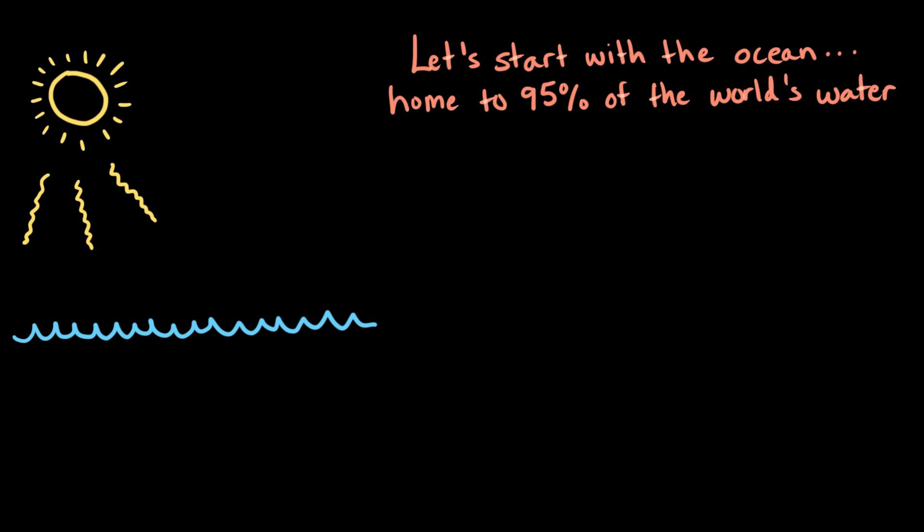When you think of water, you might think of the wide open ocean. Over 95% of all the water on Earth is in the ocean, so this is a great place to start with the water cycle. Here, energy from the sun warms up water on the surface of the ocean, enough to turn it into water vapor.